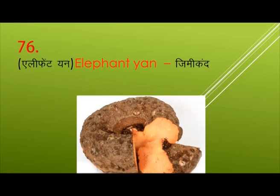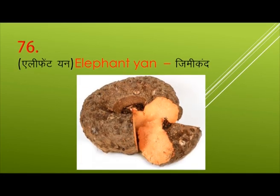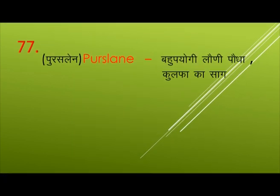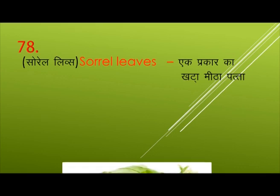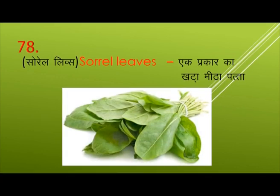Elephant Yam — Jimikand. Purslane — Pohupyogi, Loni Podha. Sorrel Leaves — Ek Prakar Ka Khatta Meetha Podha.